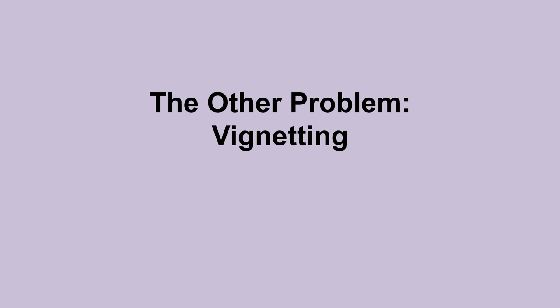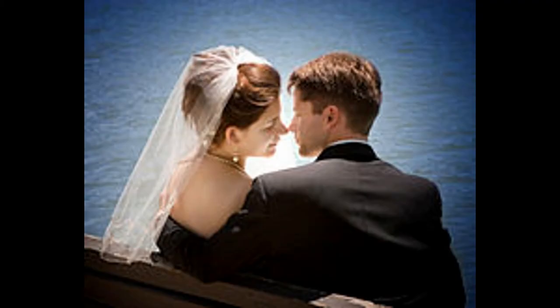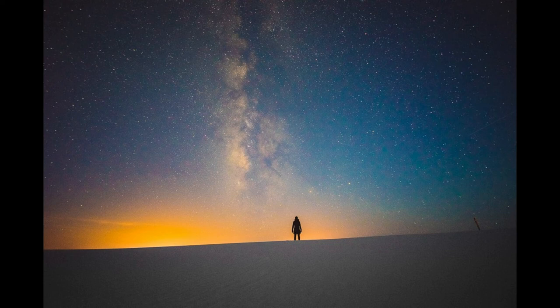Now we'll look at another problem: vignetting. Vignetting is where the edge of the frame appears darker than the center. This is common in catadioptric scopes like Schmidt-Cassegrains and MAKs because they require a baffle tube to prevent light from falling directly onto the focal plane. But this problem is common in any low F-number fast system, so Ritchey-Chrétions are prone to it too. Vignetting can be dealt with through calibration with flat frames during post-processing. Just like it can be used as a highlighting effect in wedding photos, it can also be used as a highlighting effect in astrophotos — it's all a matter of taste.